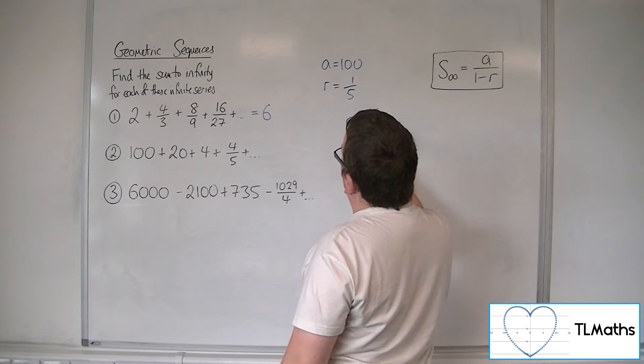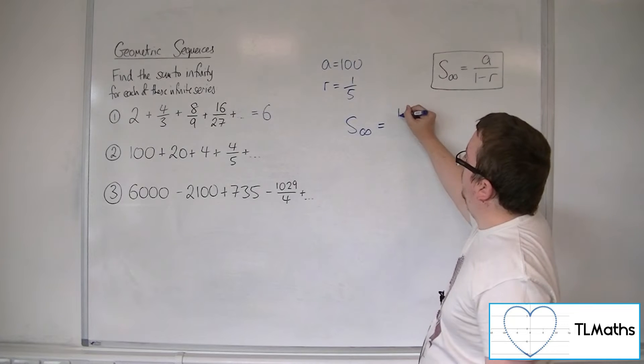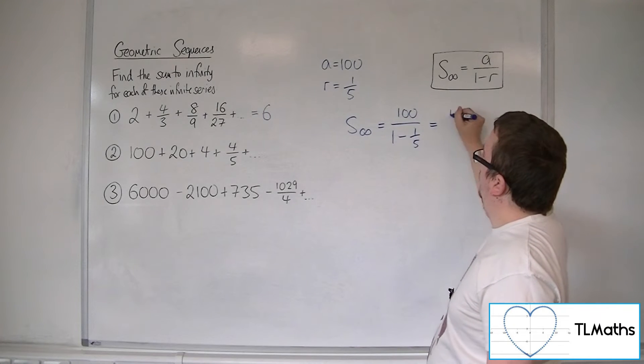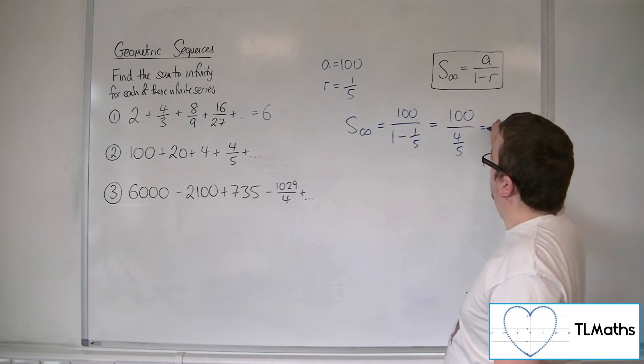So the sum to infinity will be equal to the first term 100 divided by 1 minus 1 fifth, which is 100 divided by 4 fifths.